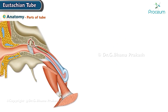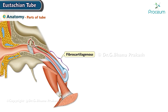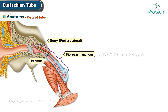The Eustachian tube has two parts: the fibrocartilaginous and the bony parts. The isthmus is the narrowest area where both parts join. The posterior lateral bony part, which is towards the tympanic cavity, forms one-third of the total length, which is 12 millimeters.